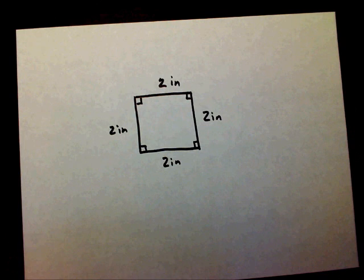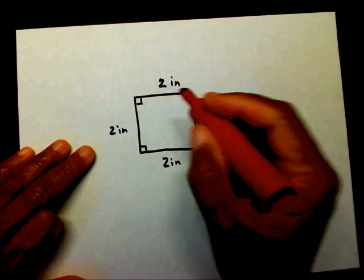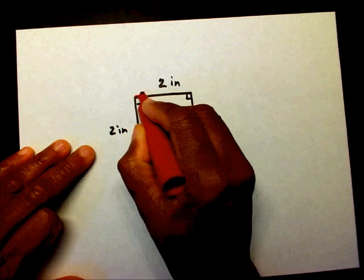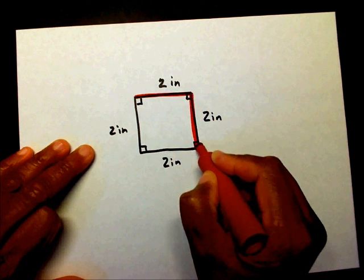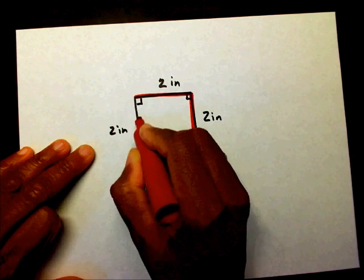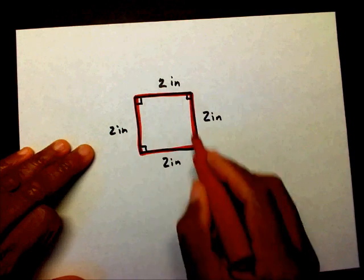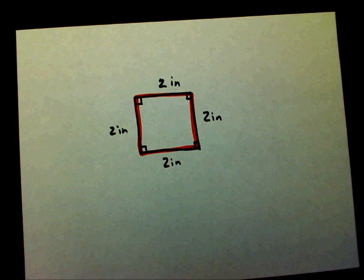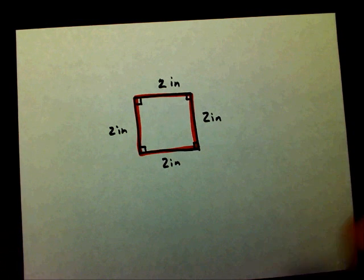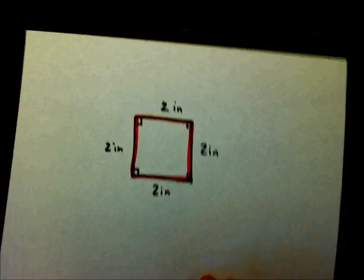If we want to find the perimeter of the square, we want to find the distance from this corner all the way around back to this corner. We want to find the distance of the red part of this shape. That's going to be your perimeter — that's what we're finding today.